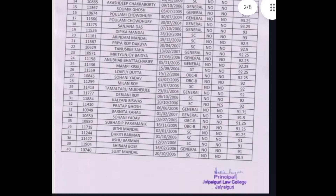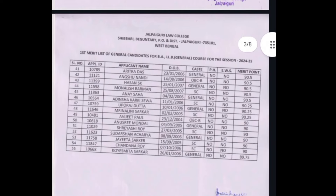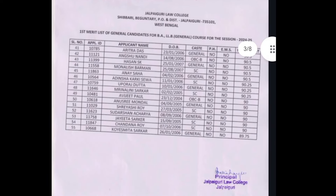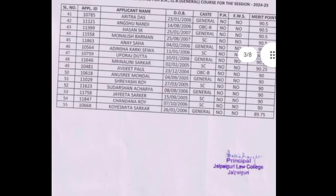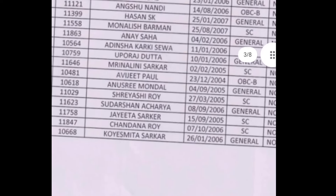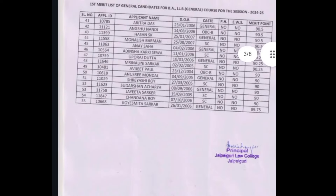On the second page, we will see the general category. Here, 55 students will be in the general course. The general course details are shown on this page.